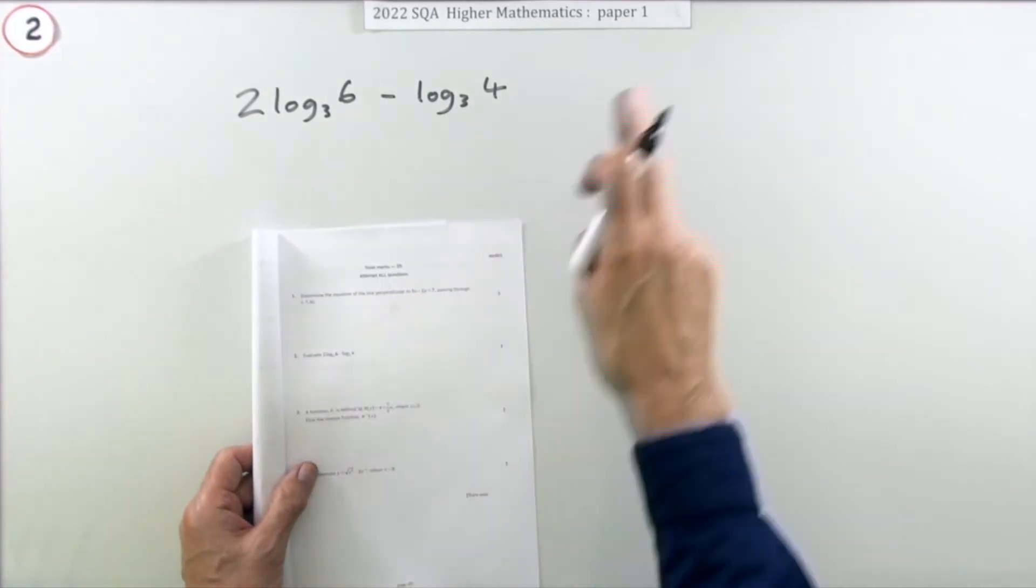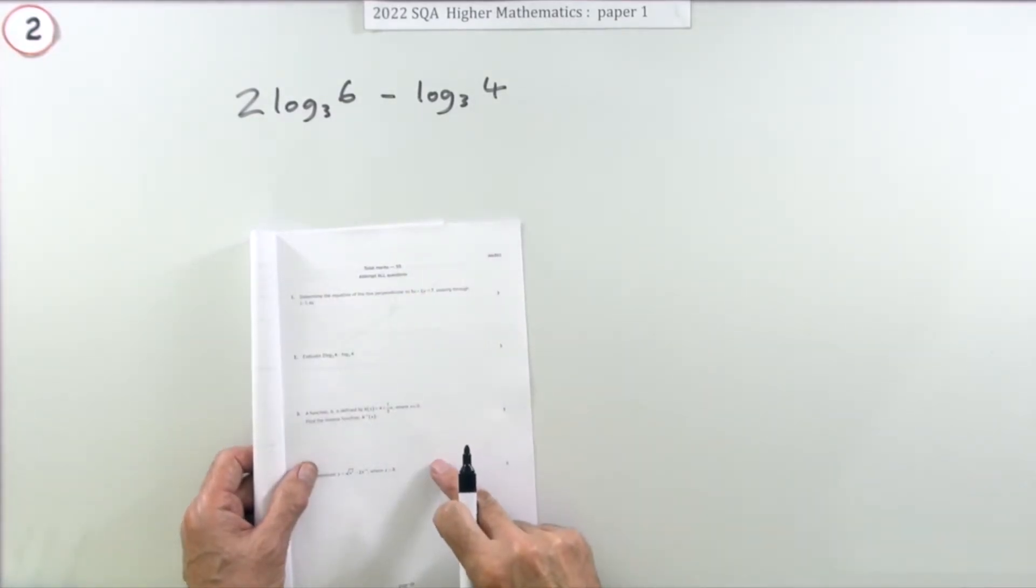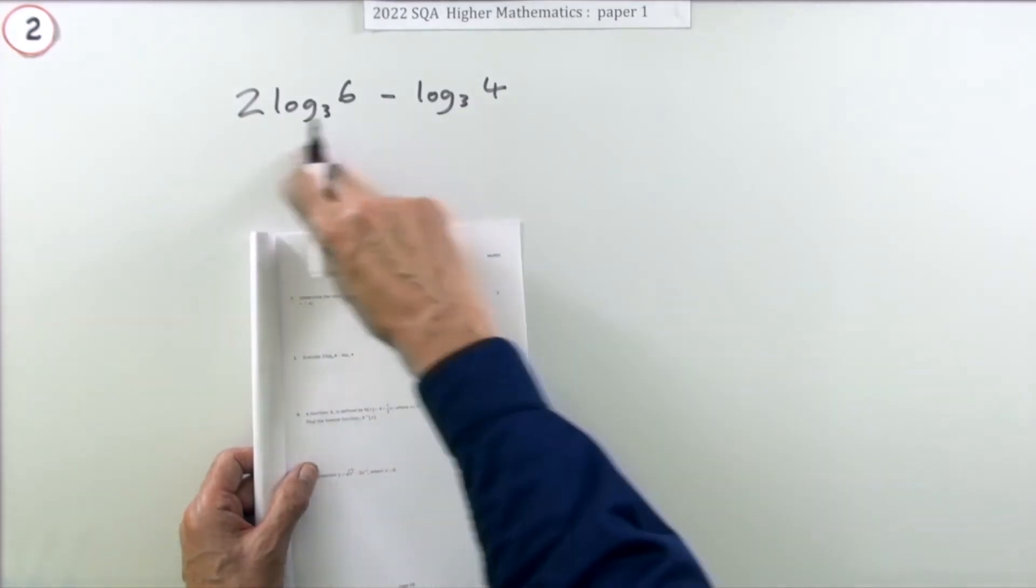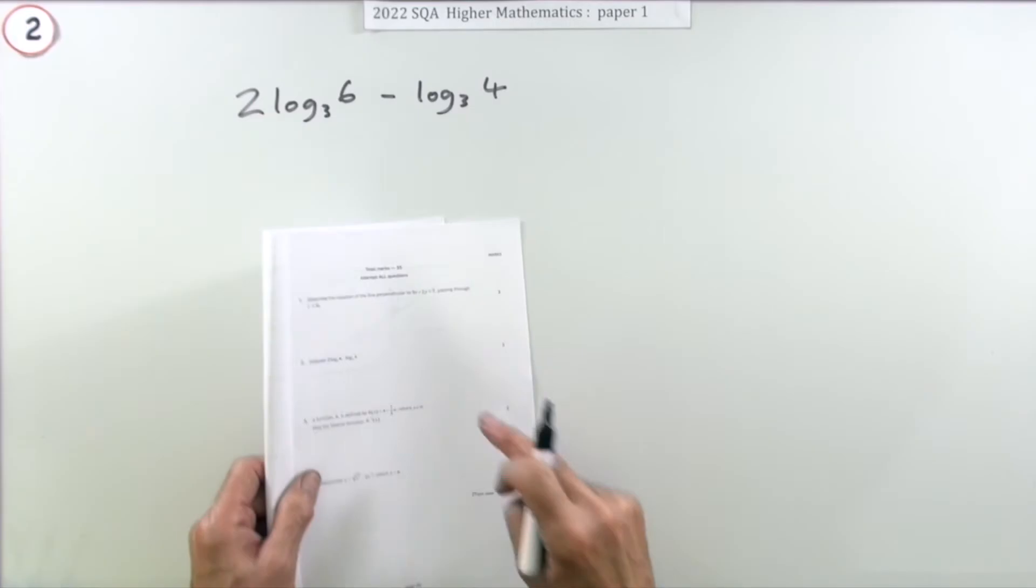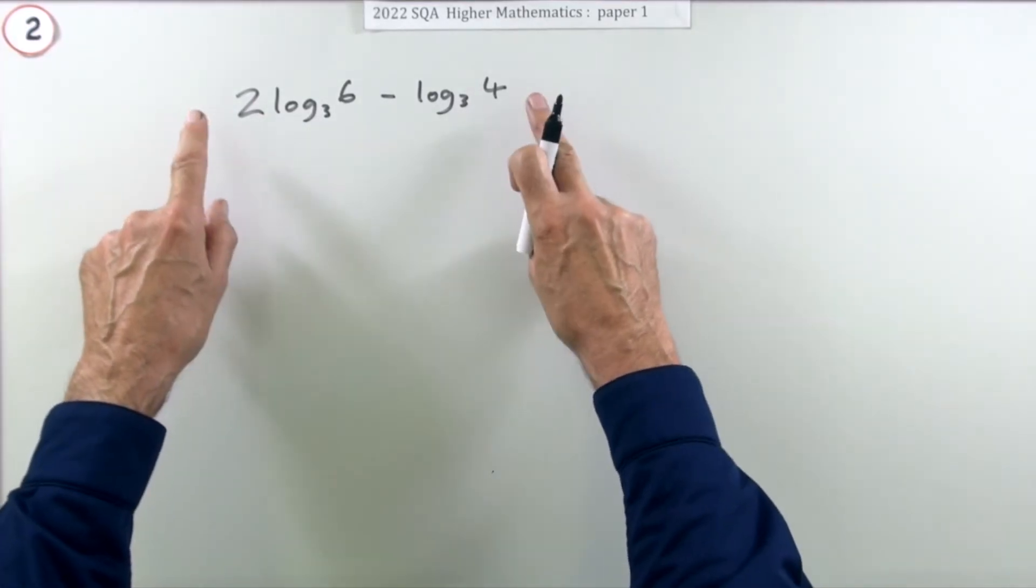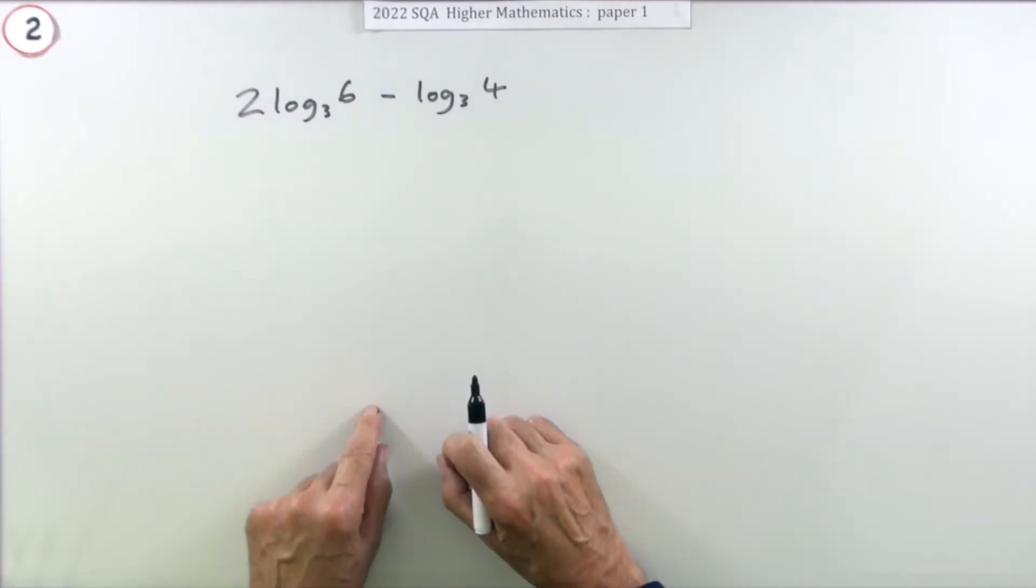So question two then from paper one of the 2022 higher maths, three mark question again. Evaluate these logs for three marks. What you'll be doing here is using the laws of logs that you know.